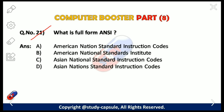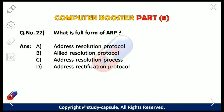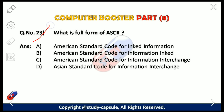Our 21st question: what is the full form of ANSI? The answer is B — American National Standard Institute. Our next question: what is the full form of ARP? The answer is A — Address Resolution Protocol.